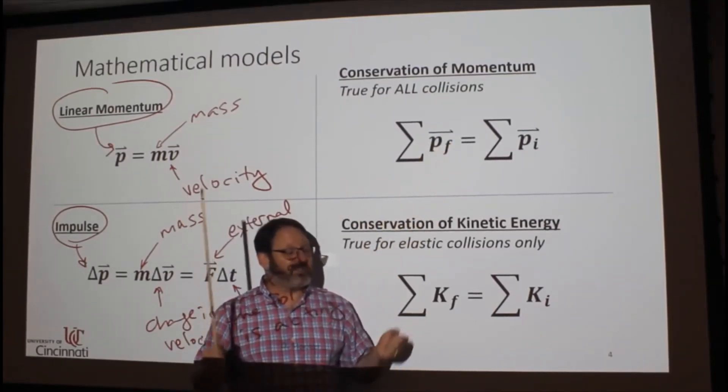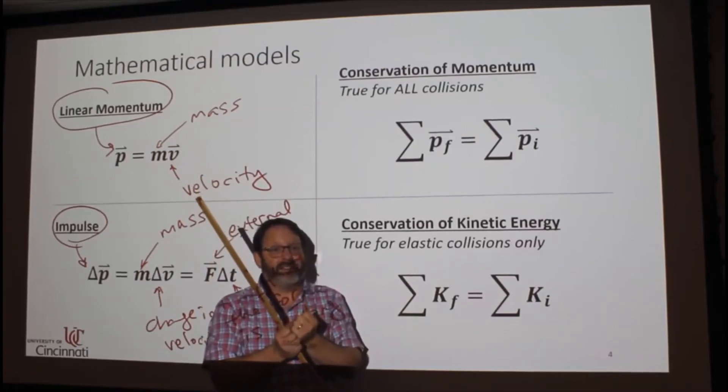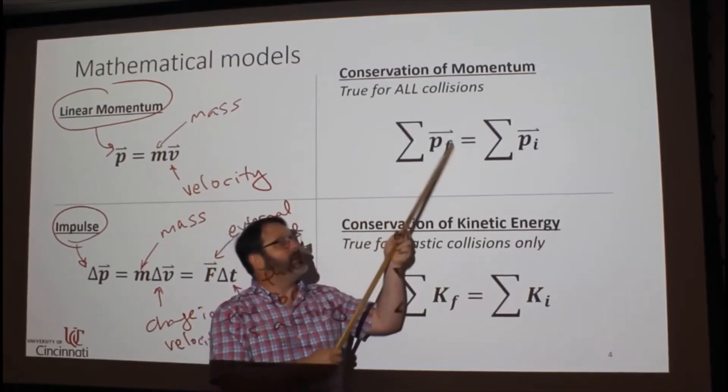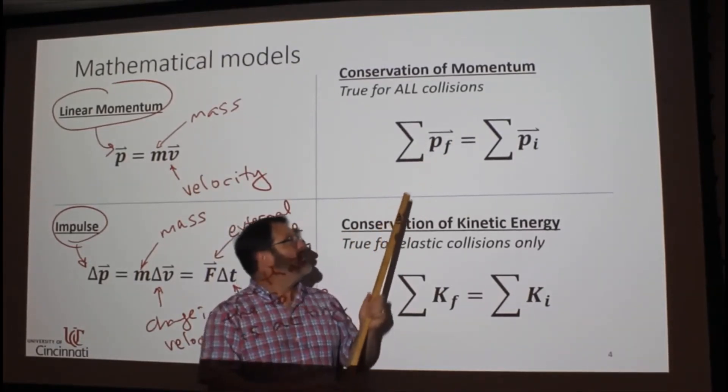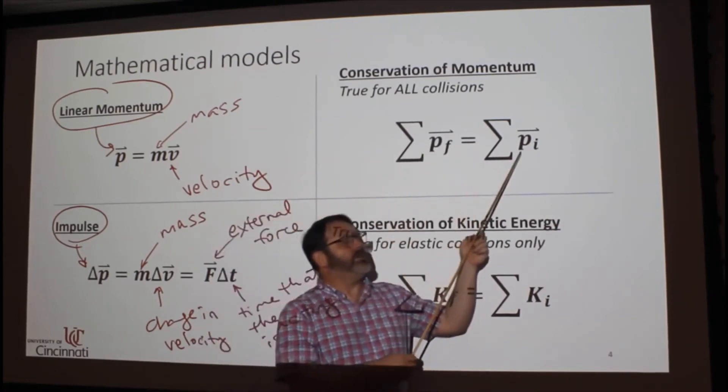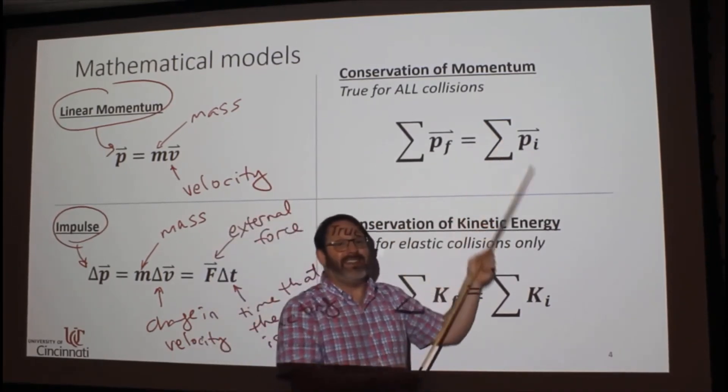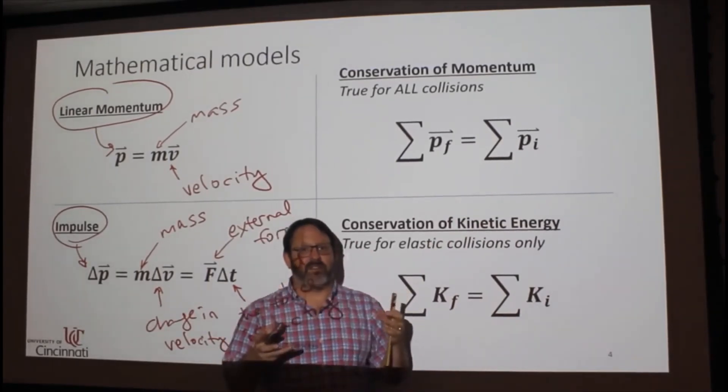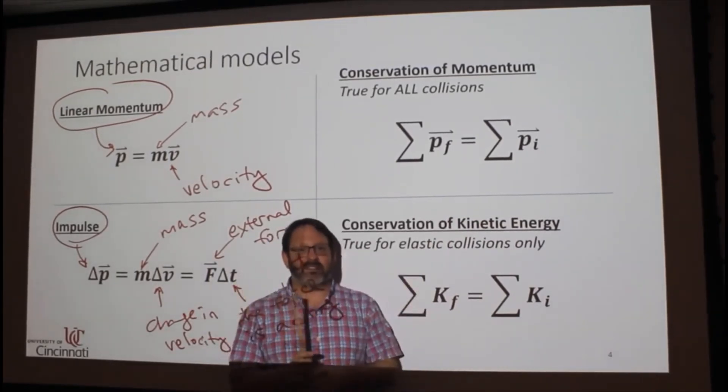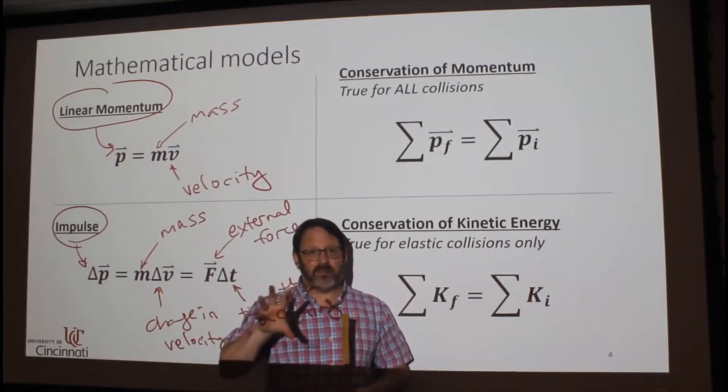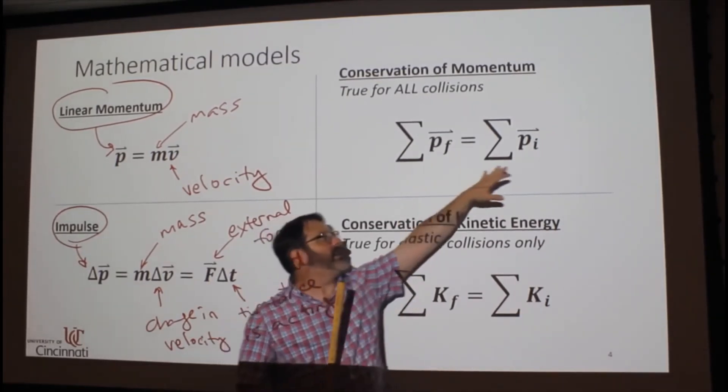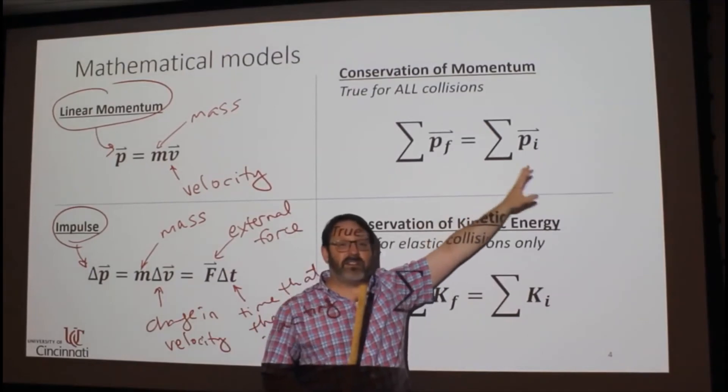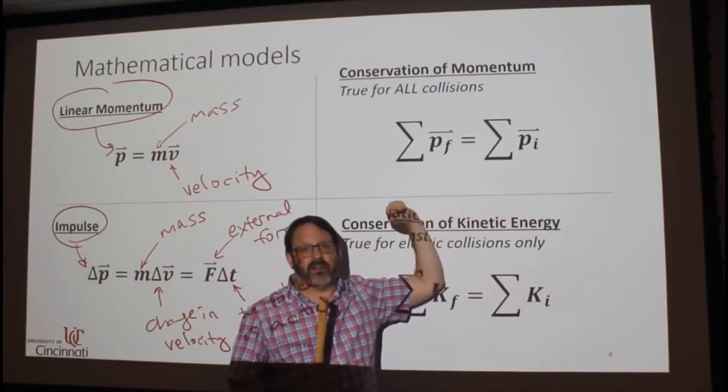Normally, if you've got a collision, you've got two or more things that are hitting each other. So you have to take the final momentum of each piece. If you add all of those up, they will be equal to the sum of all of the initial momenta of those same objects. So you take every object in the system, find their momentum, add them together, and then the initial is equal to the final.